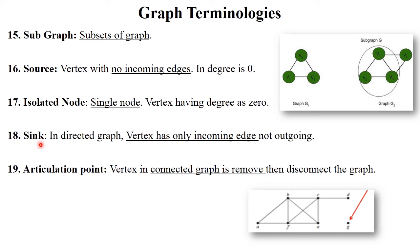Next is sink — a vertex that has only incoming edges and no outgoing edges. Next is articulation point. Suppose we have a graph with vertices V1, V2 and V3. If we remove vertex V1, the graph becomes disconnected. A vertex whose removal disconnects the graph is called an articulation point.